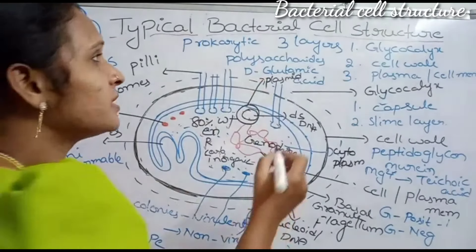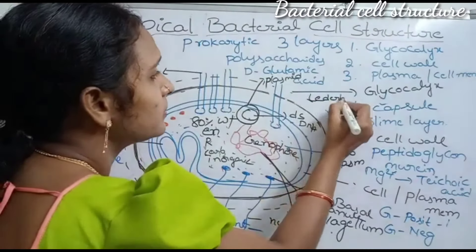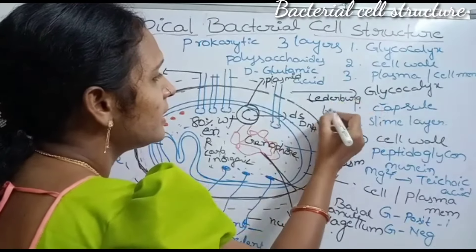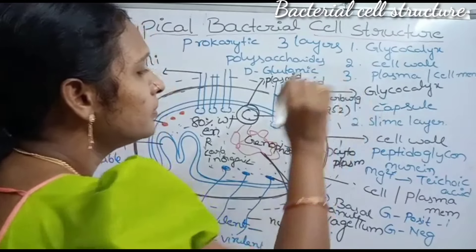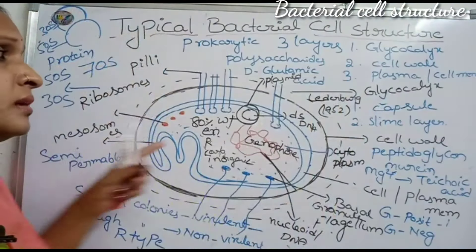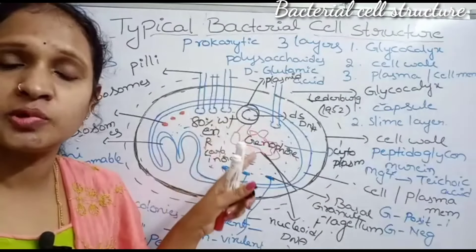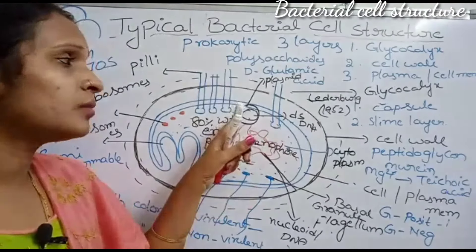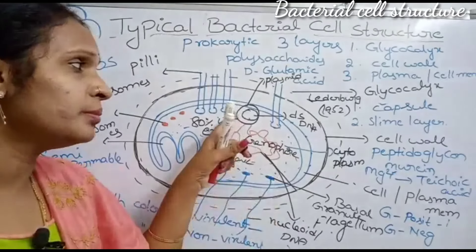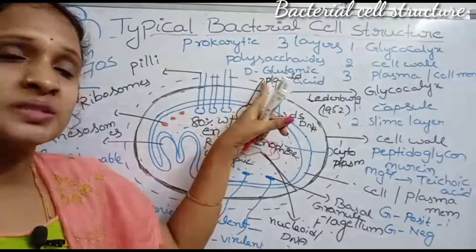The term plasmid was coined by Lederberg in 1952. Plasmids are nowadays widely used in genetic engineering processes. That is why bacteria are mostly used in experiments — because of the presence of plasmids.